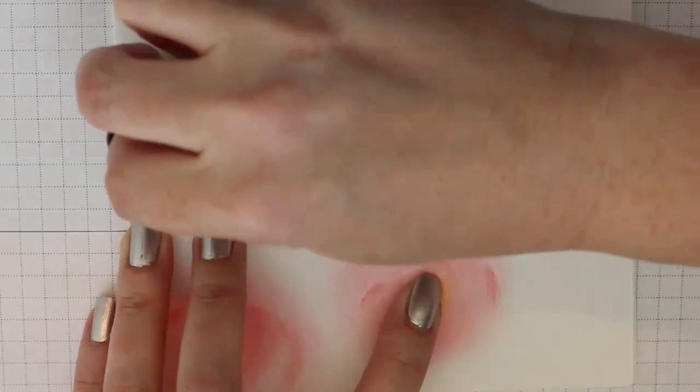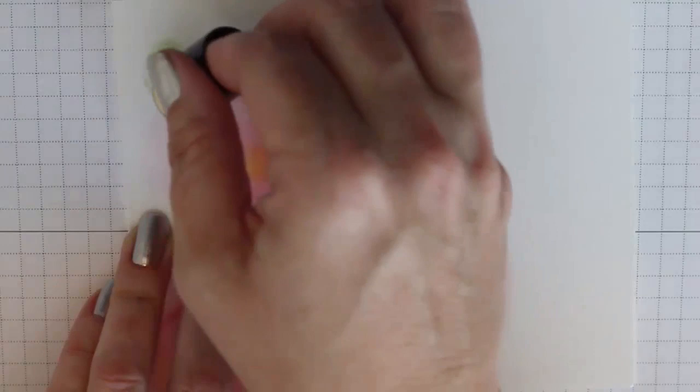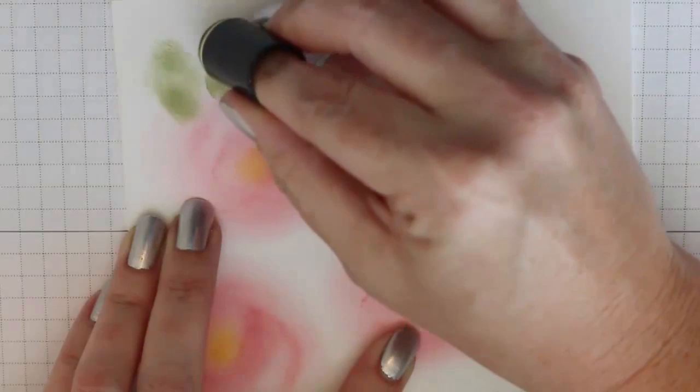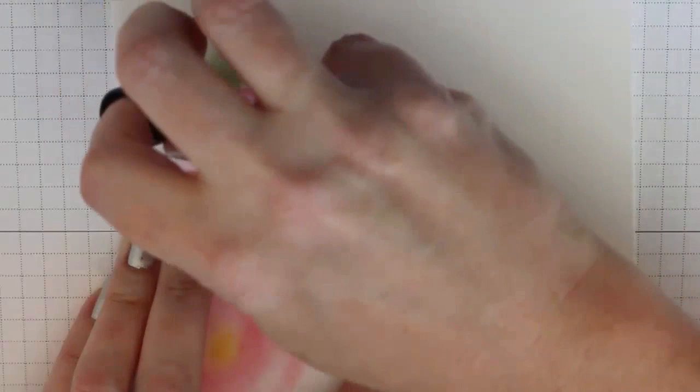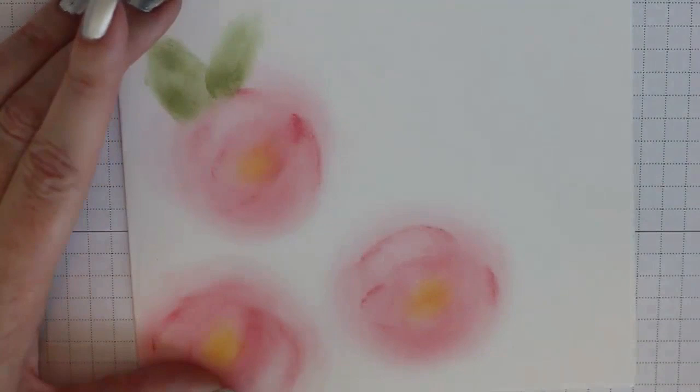And then I'll use a sponge dauber and some Mossy Meadow ink to make a half circle one way with the edge of the sponge dauber, and then a half circle the other way to form sort of a leaf shape. And these colors are so harmonious together, I really like them. And we just want to give the illusion that there is a little bit of foliage in addition to the flowers.